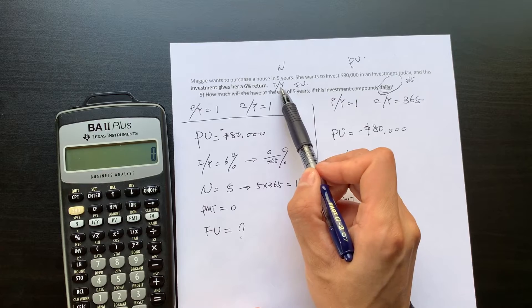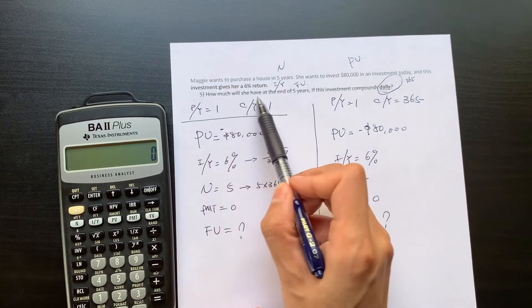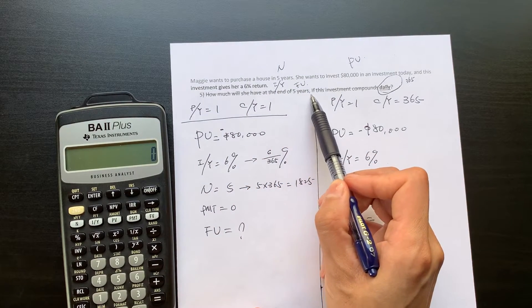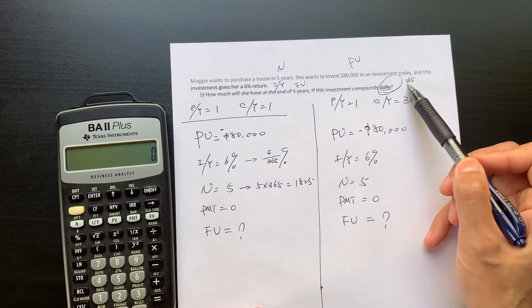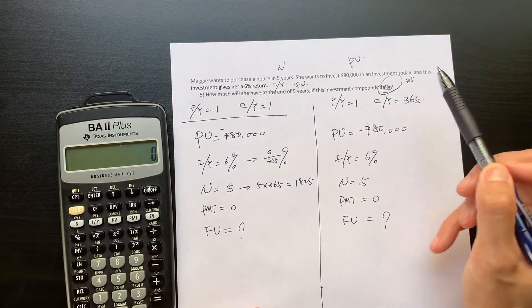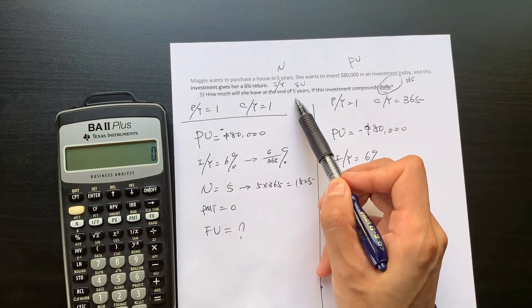6% is annual return. Then how much will she have at the end of the five years if this investment compounds daily? Compound daily is 365 days. So we want to find out the future value.